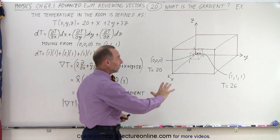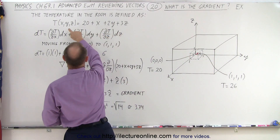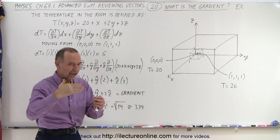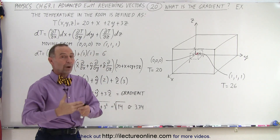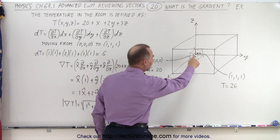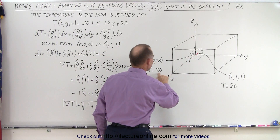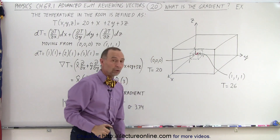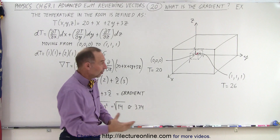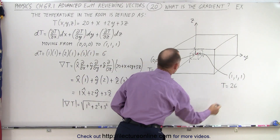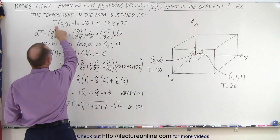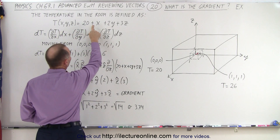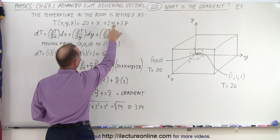What we have before us is a room with an equation that defines the temperature of the room in terms of x, y, and z. The temperature changes as we travel through the room in the x, y, or z direction. At the very corner down here the temperature is equal to 20, and if we move to a different location the temperature will be different. For example, when we travel to the location (1,1,1) — assuming that's in meters — the temperature will now be 26 degrees. The function is: T(x,y,z) = 20 + 1x + 2y + 3z.